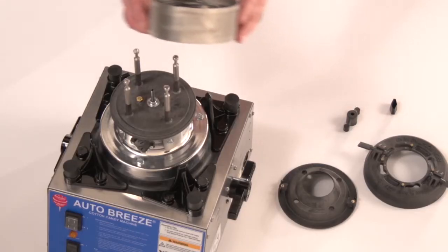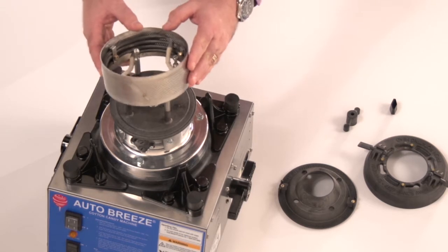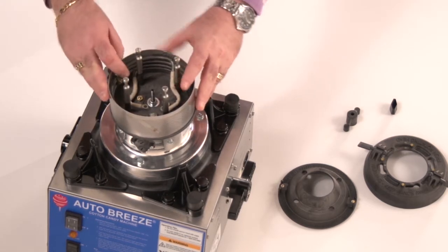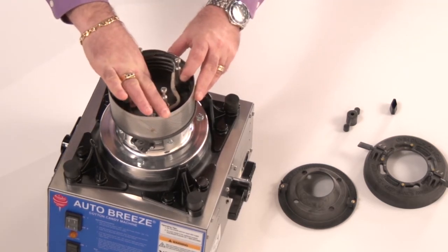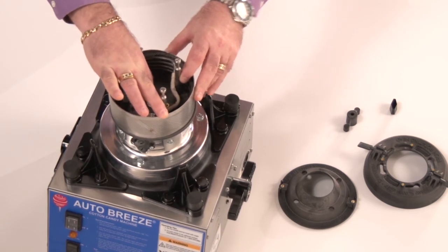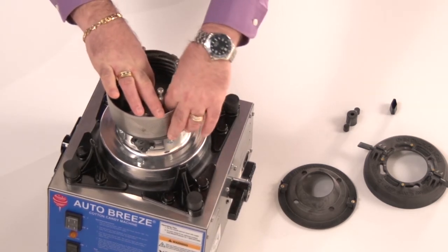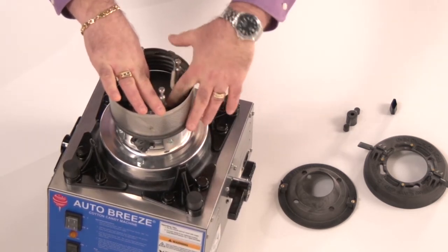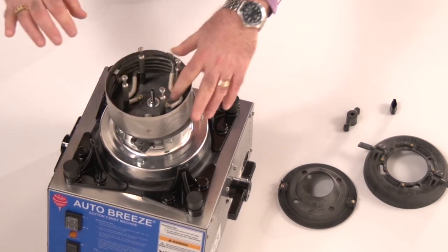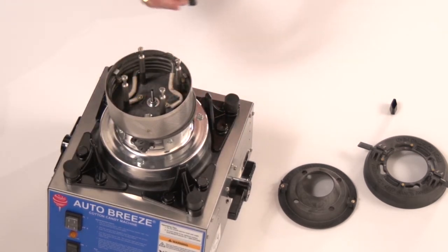Now to reinstall the heat element, we will simply slide it over the machine and make sure that our electrical connections line up with the two terminals. Now it's not uncommon for those wires to be out of shape a little bit after you clean it, so make sure that those connections are on the terminals.